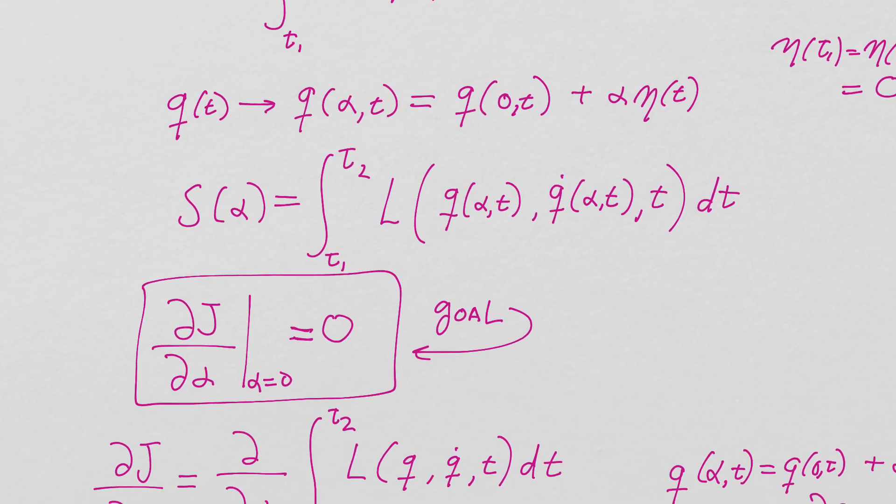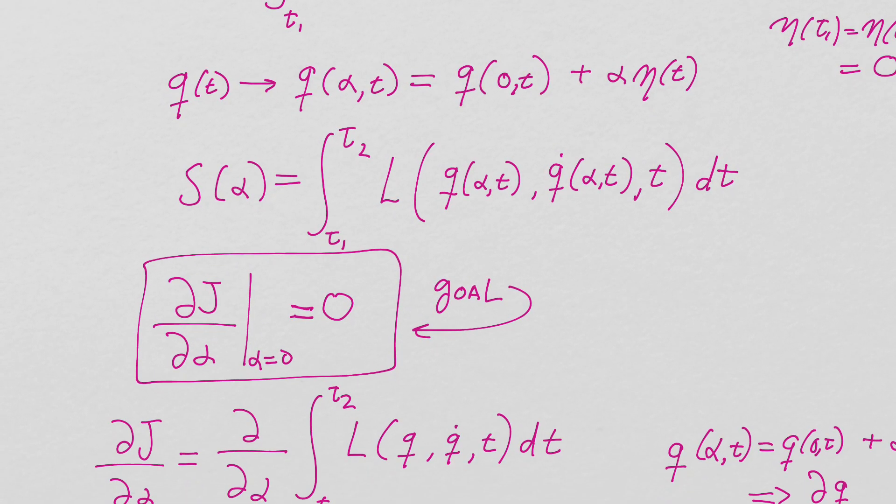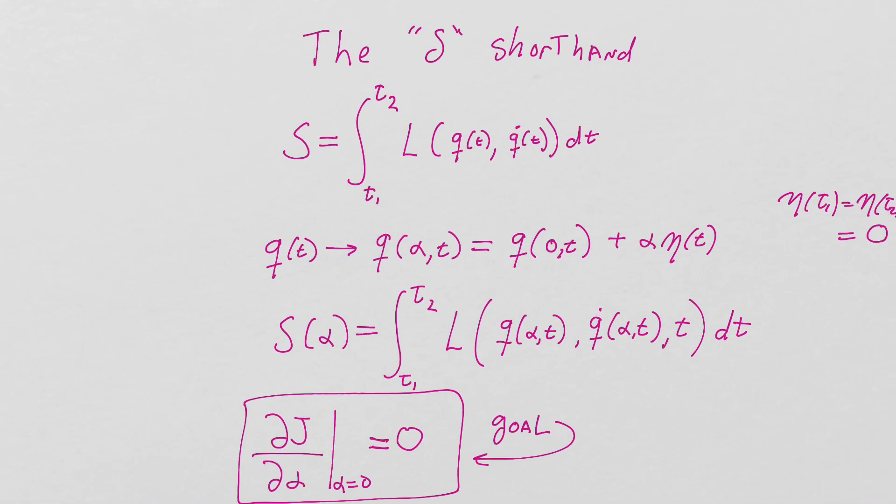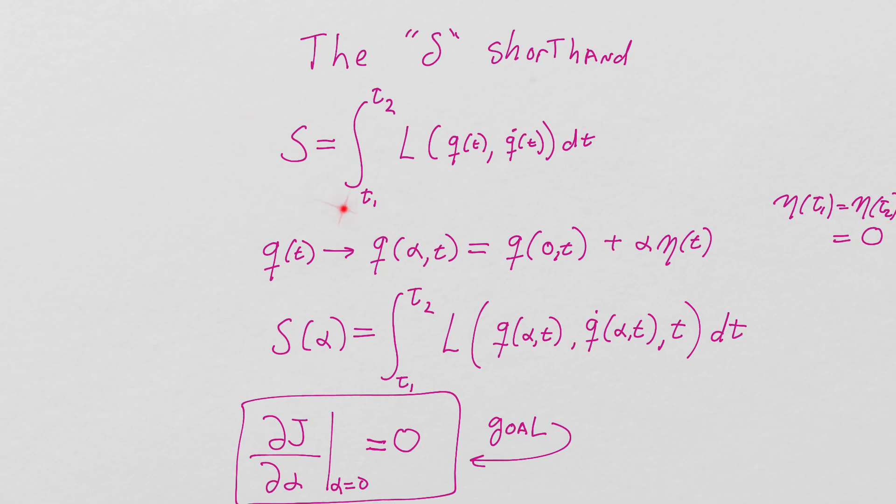Where before we just added a little thing to it, now we're going to formalize it with this function eta. It proceeds from there pretty clearly. We replace q of t with q of alpha and t in the expression for the action, where if we set alpha to equal zero, we have the exact same expression we have up here. And that's ensured by this, which equals q of t, the same q of t we're talking about right there.